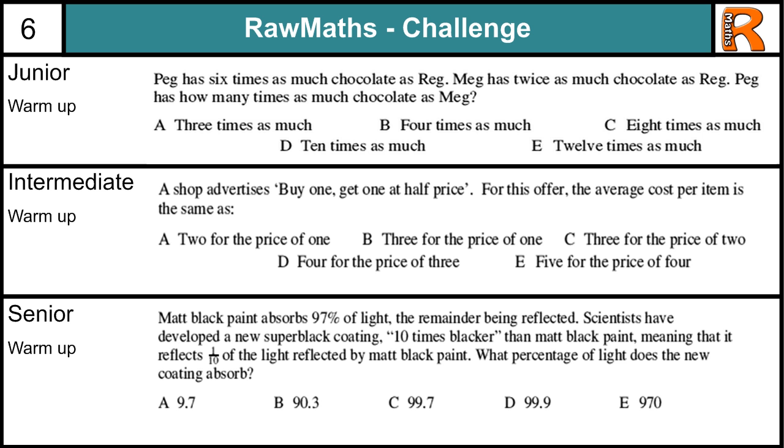Let's get started with the junior warm-up. Peg has six times as much chocolate as Reg, so Peg equals six times Reg. Meg has twice as much chocolate as Reg, so Meg equals two times Reg. Peg has now how many times as much chocolate as Meg? Well what we need to do here, we could spot this straight off, but probably the best thing to do is just to say everything is in terms of Reg. If we call Reg one,